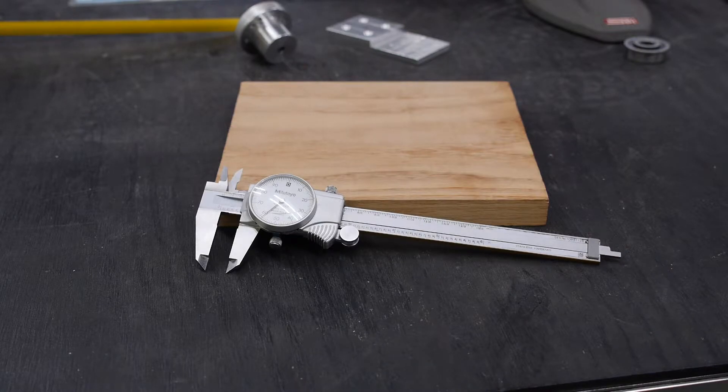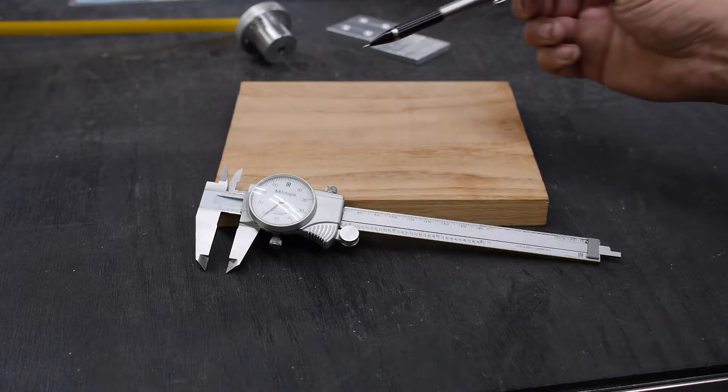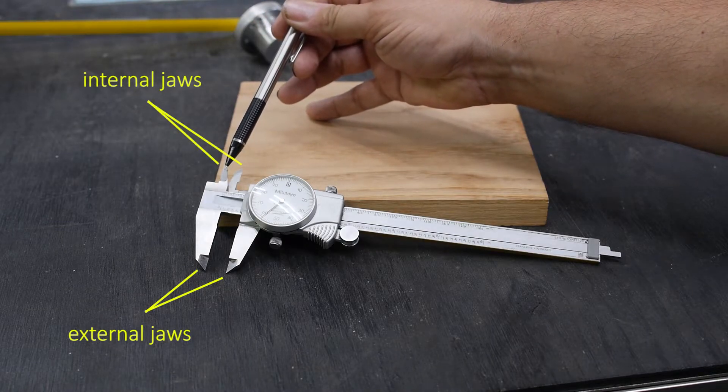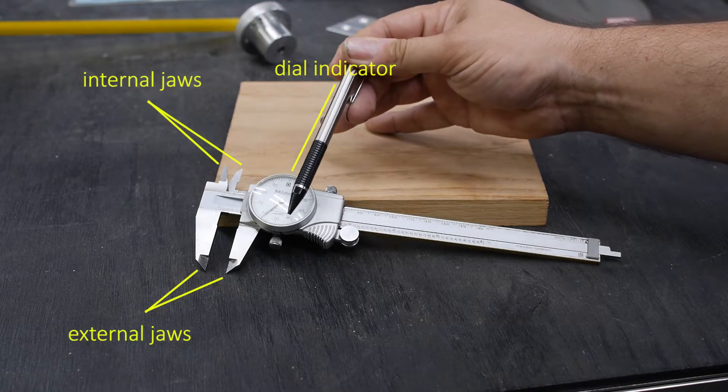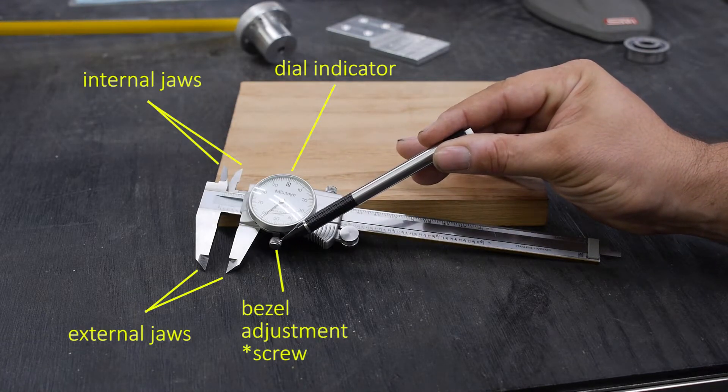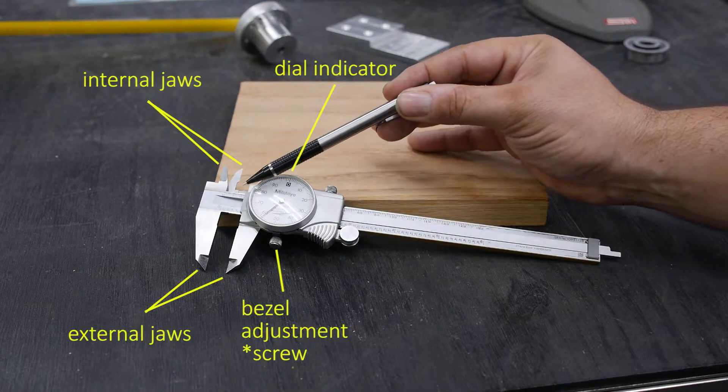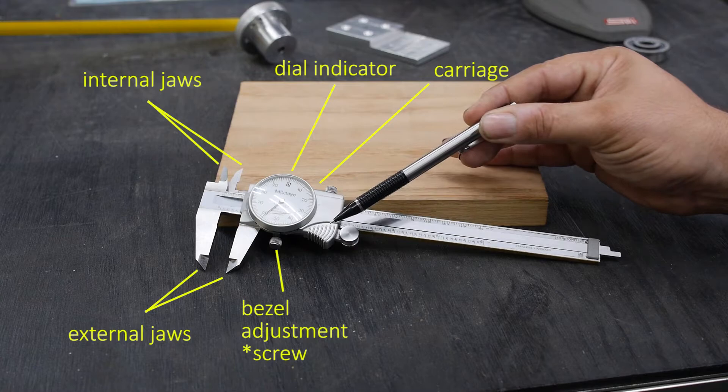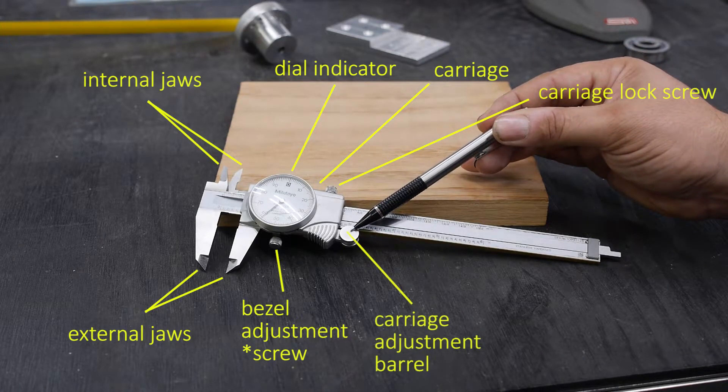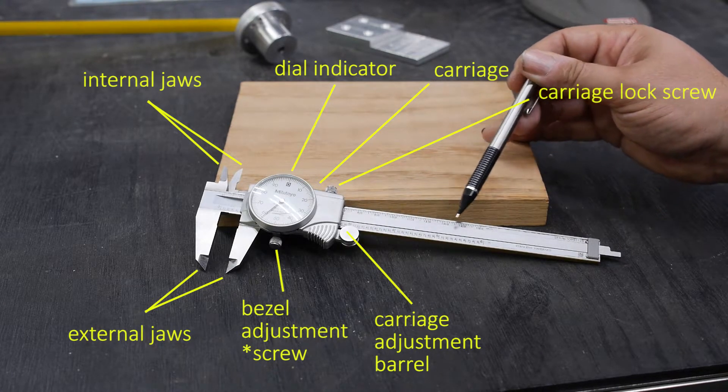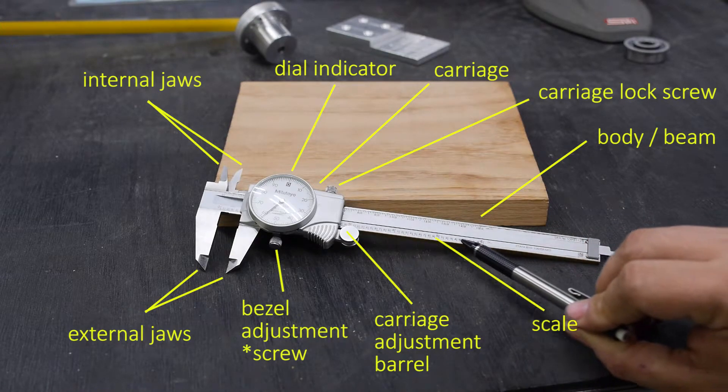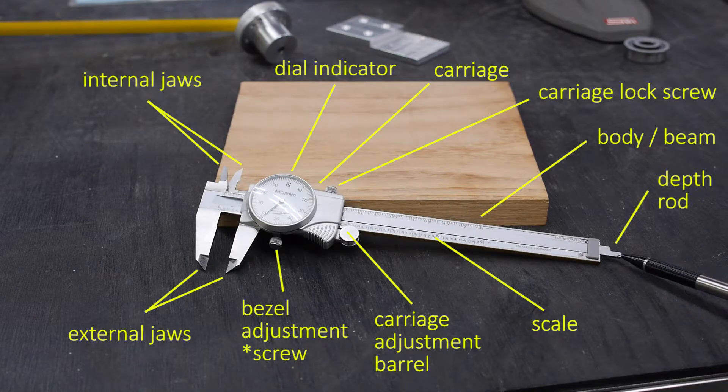Next, let's talk about common components of a pair of dial calipers. Starting at the left side, we have the external jaws. At the top, we have the smaller internal jaws. Next, we have the dial indicator and the indicator bezel adjustment nut. The portion of the calipers that slide left and right is called the carriage. Here we have the carriage lock screw, the carriage adjustment barrel, the body or beam of the calipers. At the bottom of the beam, we have the caliper scale. And finally, we have the caliper depth rod.